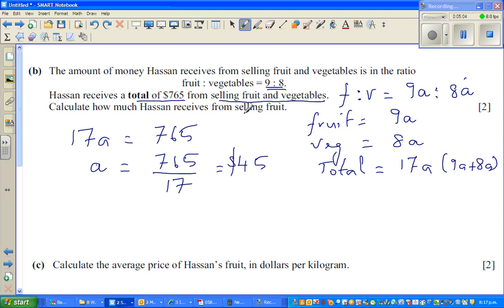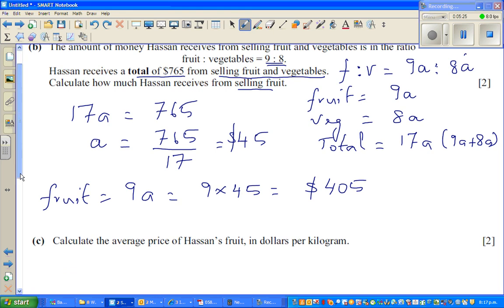So the question is, how much does he get by selling fruit? So fruit, we again know is 9A, which is 9 times 45, which is 405. Because this is 360 plus 45 is 405.